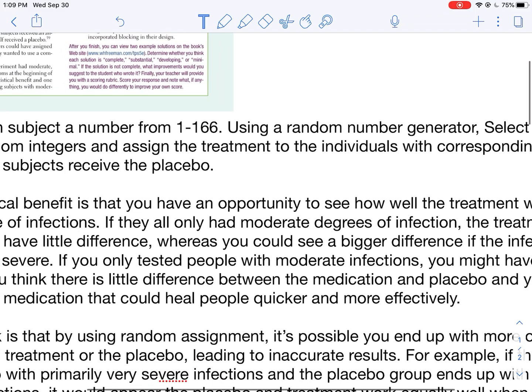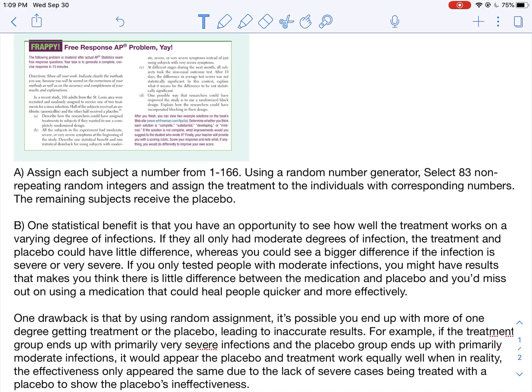And you miss out on using a medication that could heal people quicker and more effectively. Notice how I include that last sentence here. What would be a result of me not doing this correctly? Like if I didn't account for these differences, what could happen to my results? Always include something like that. You don't want to say, well this could happen, you know, like it would be bad. Why would it be bad? You'll notice here that I said because you would misjudge the effectiveness of the medication. If you only had moderate then you'd say, well you know, maybe it doesn't work, I'm not really seeing a huge difference, whereas maybe this medication could be a huge benefit to people with severe symptoms.